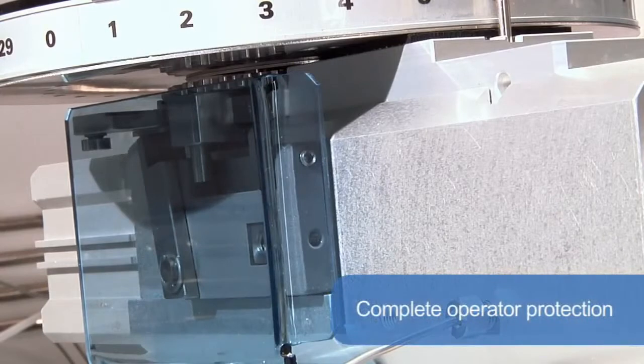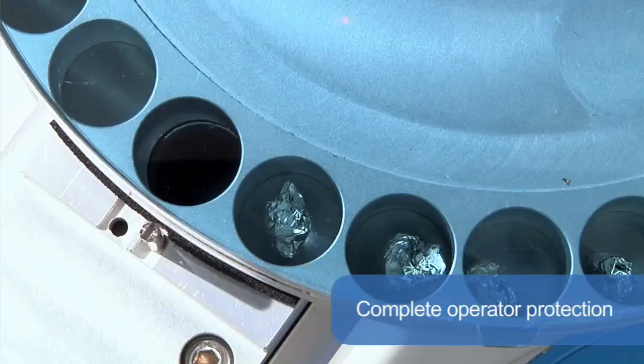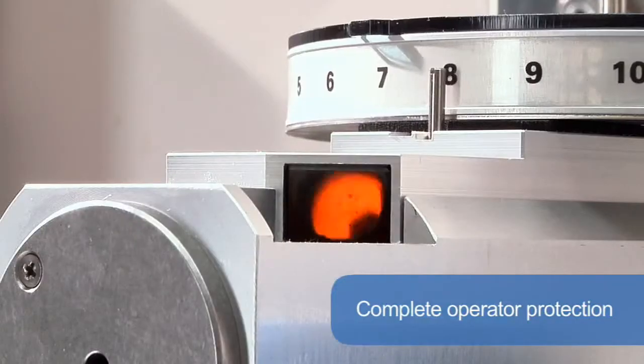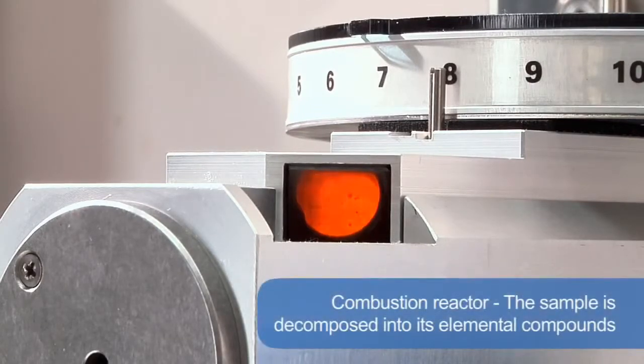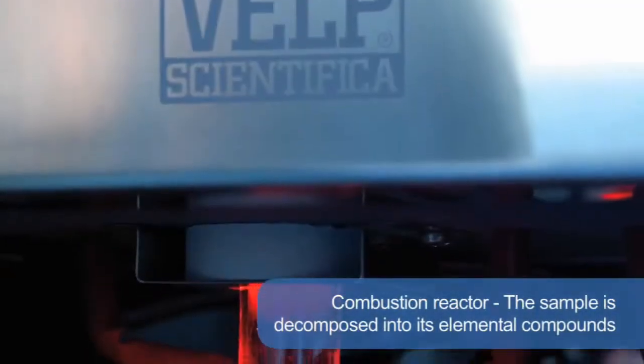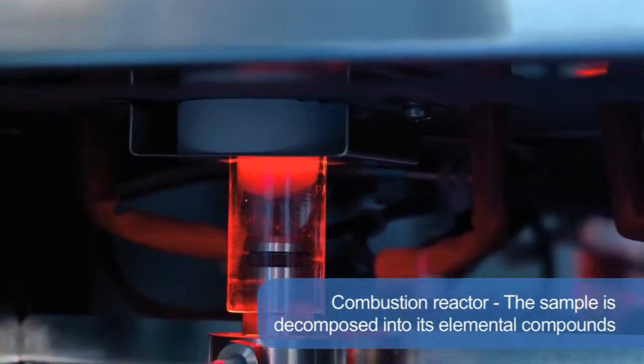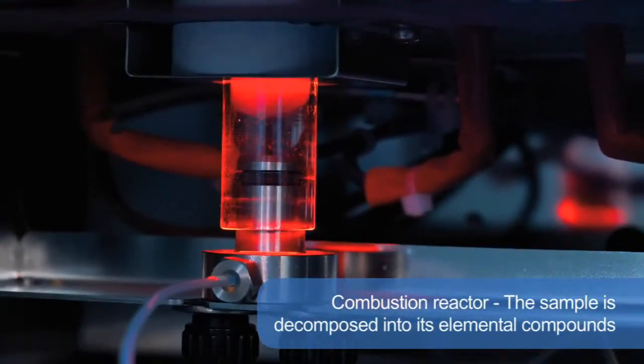The combustion reactor, filled with catalysts and in the presence of pure oxygen, ensures complete combustion. During the combustion at 1,030 degrees centigrade, the sample is decomposed into its elemental compounds, such as carbon dioxide, water, and several nitrogen oxides.